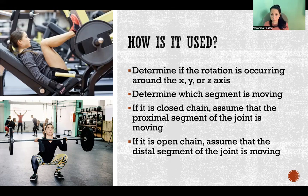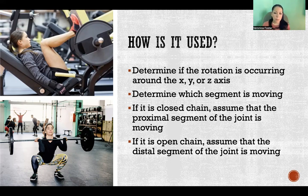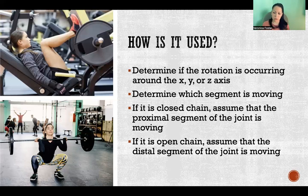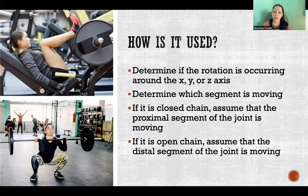Then we determine which segment is the one that's moving. For example, with hip movement, the hips are flexing and extending during the different phases of these movements, but the bones that are actually moving — the segments that are actually moving — are opposite. We need to determine which segment is moving between the two segments that make the joint. If it's a closed chain movement, we can assume that the proximal segment of each joint in that chain is what's moving. If it's an open chain, then we can assume that it's the distal segment of each joint in that chain that's moving.